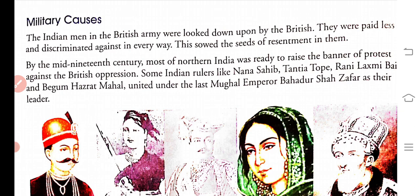By the mid-century, most of Northern India was ready to raise the banner of protest against British oppression. Indian rulers like Nana Sahib, Tantya Tope, Rani Lakshmi Bai, and Begum Hazrat Mahal united under the last Mughal Emperor Bahadur Shah Zafar as their leader.